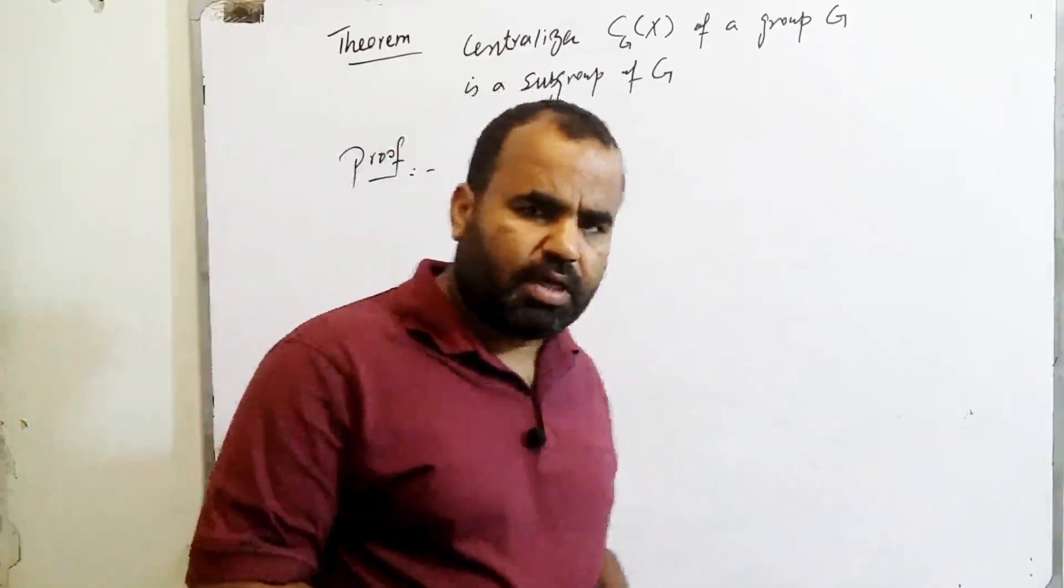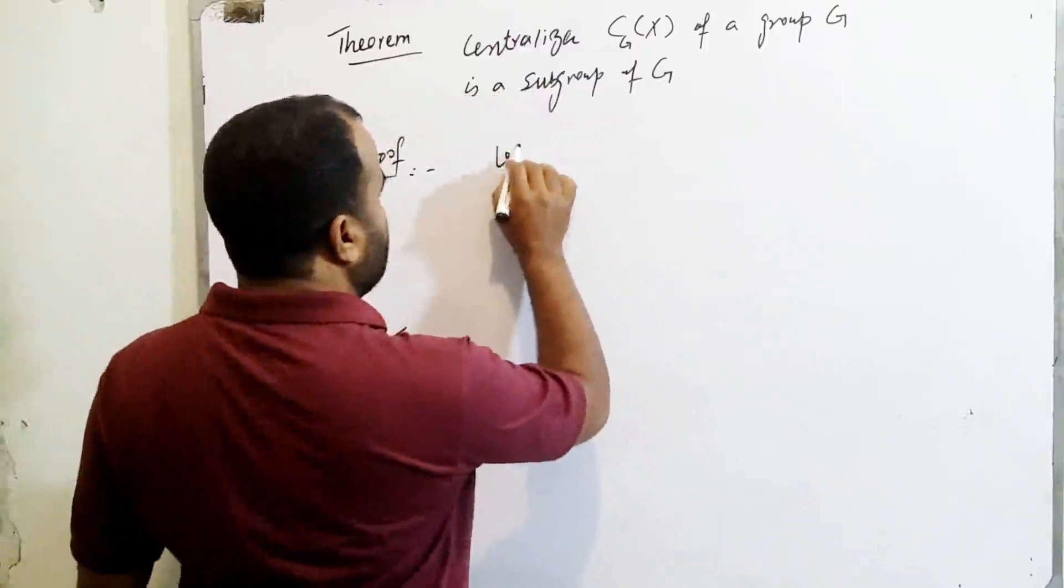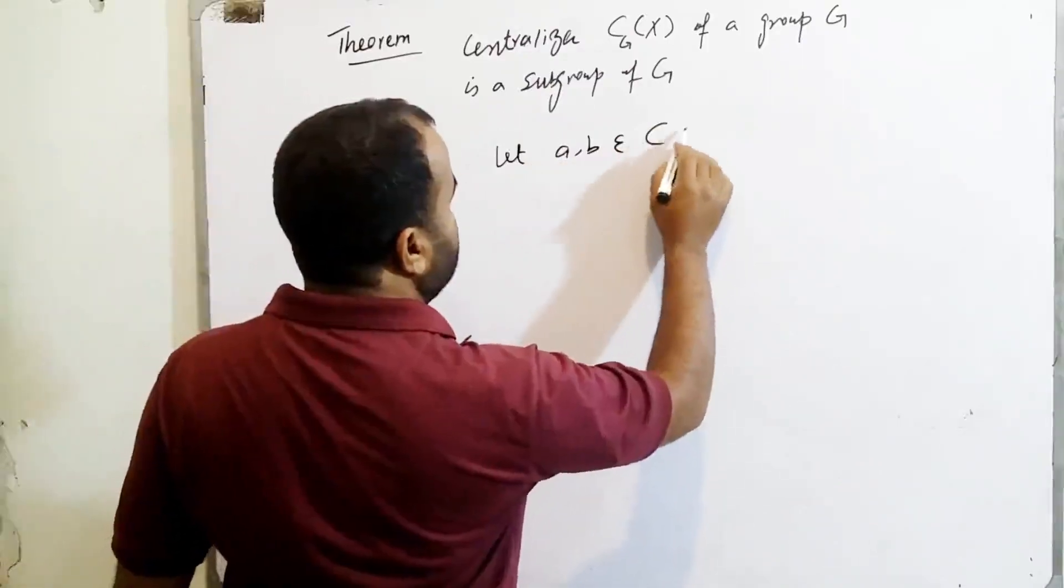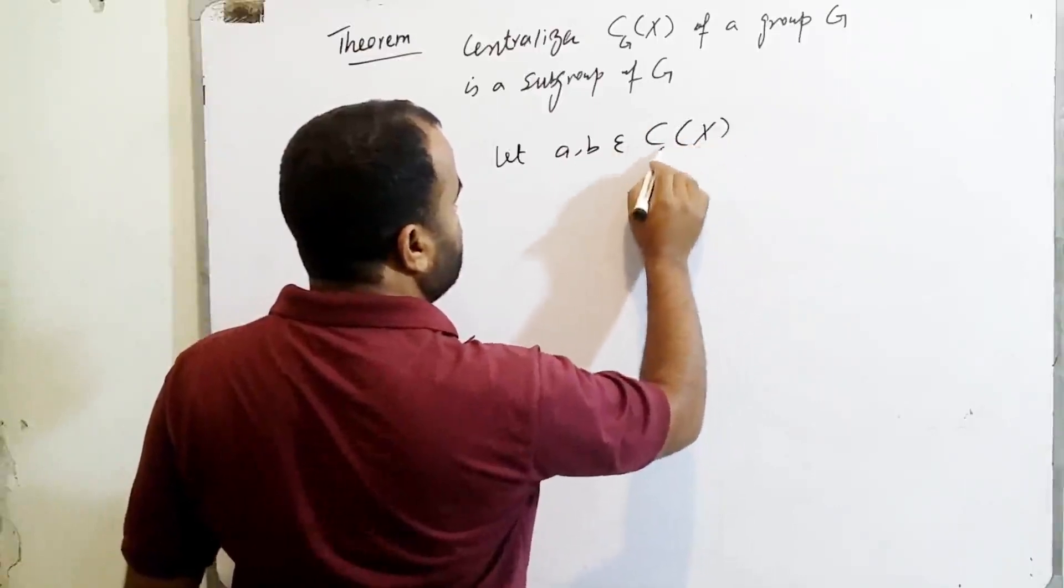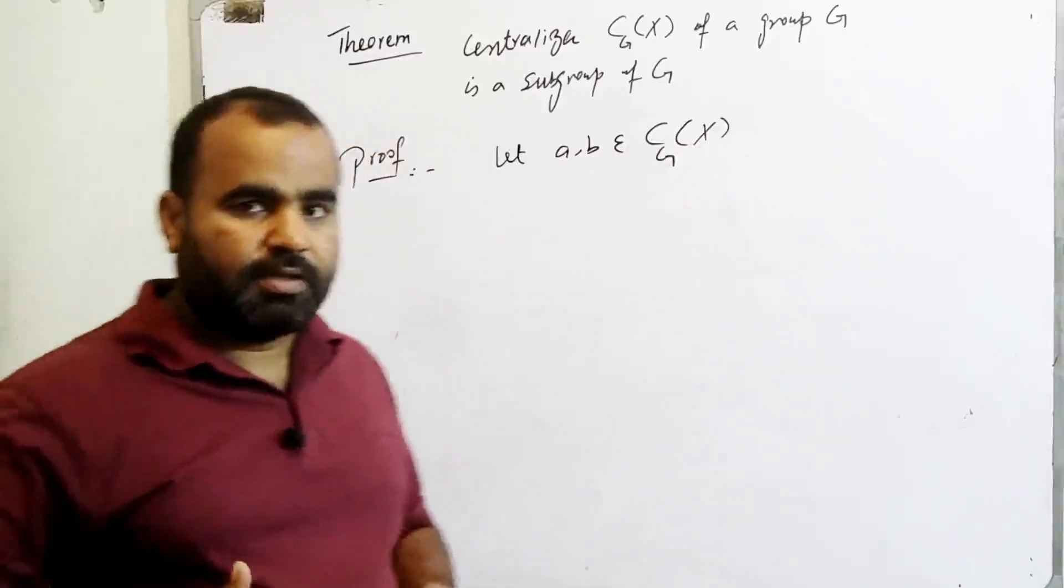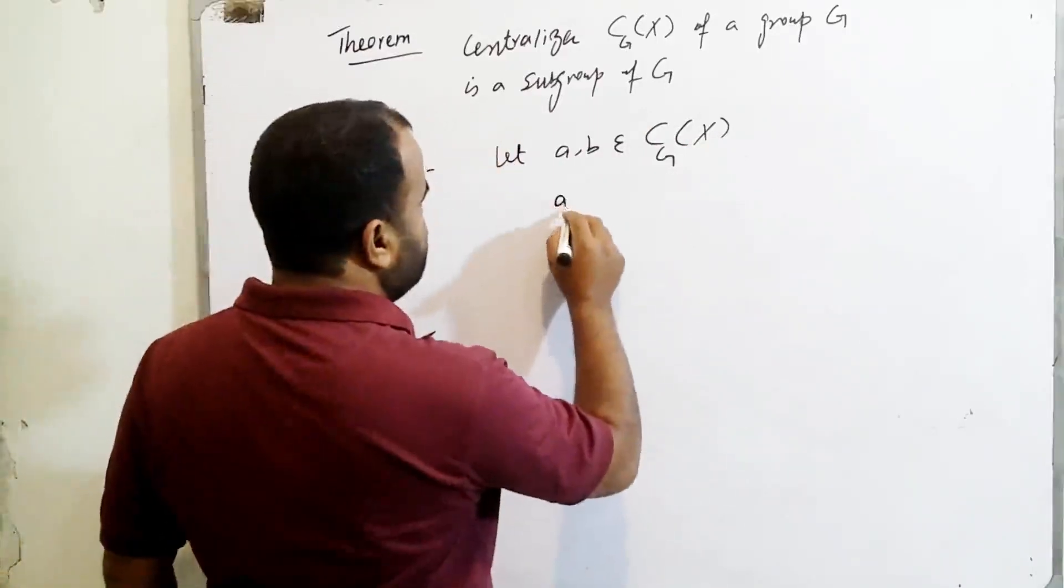What is the method? We will take two elements. Let a, b be two elements of centralizer of X in G. Then by the definition, AX is equal to XA for all A belonging to G.